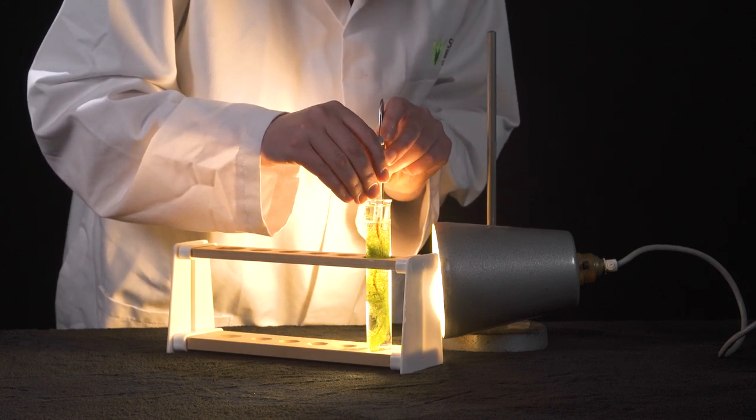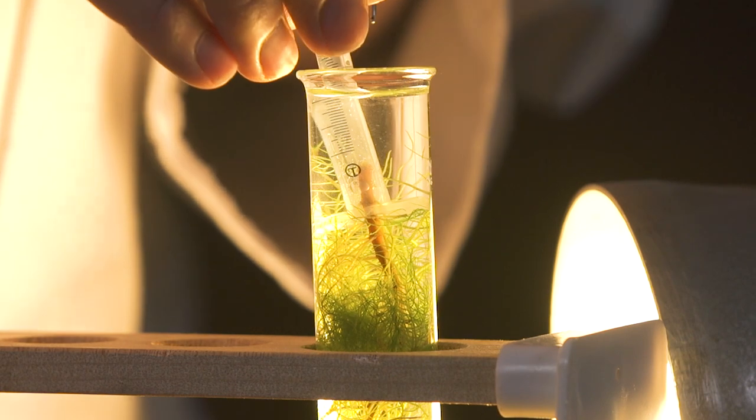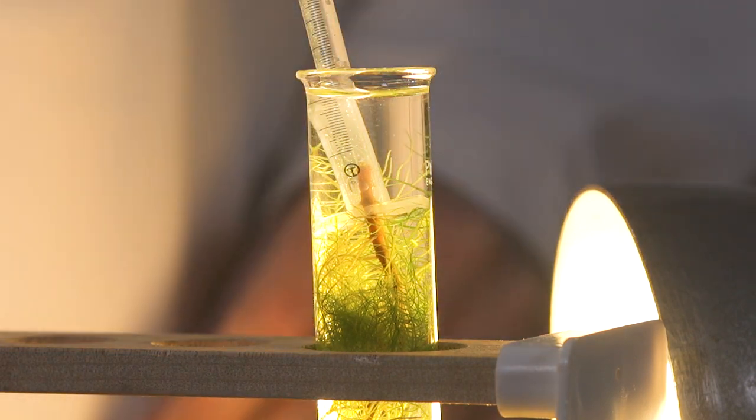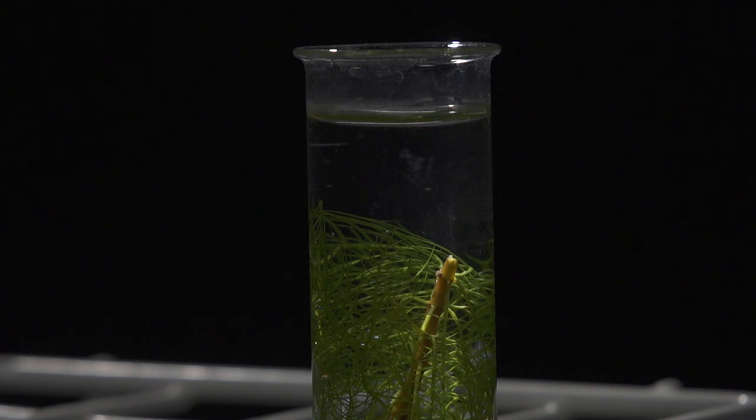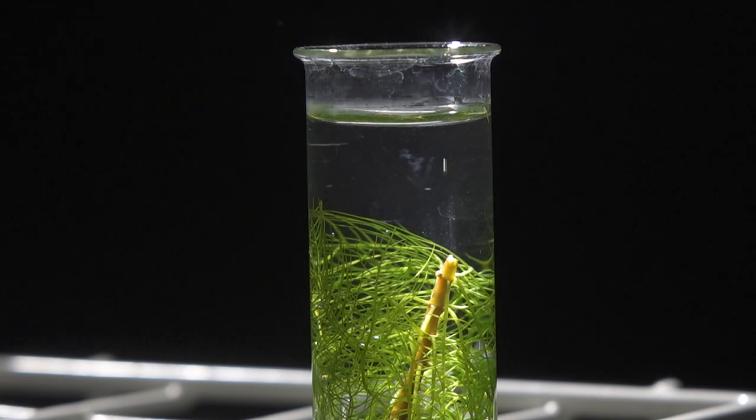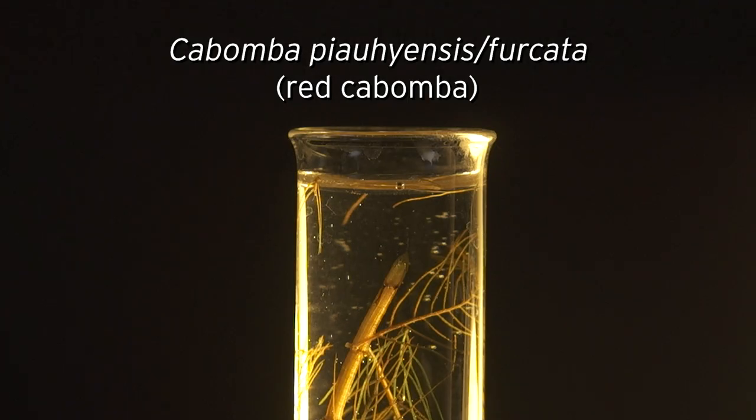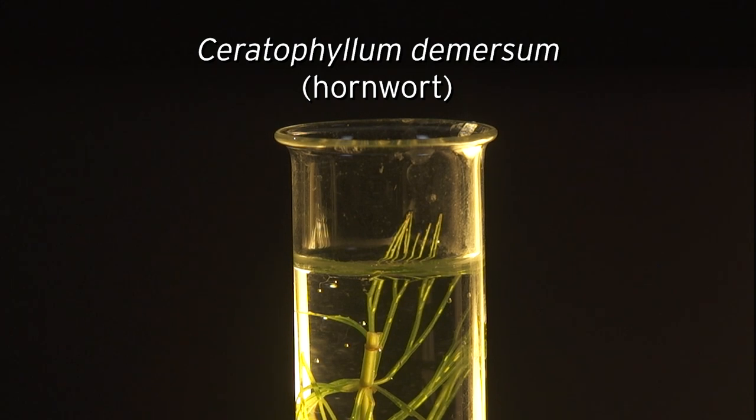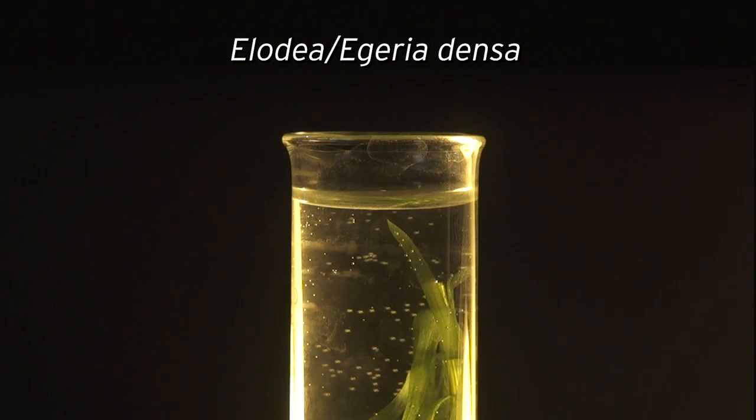I hope that we have shown you here that you can make the bubbling pondweed practical a success. All of the species we recommended produce bubbles, and the bubbling rate will respond to changes in light intensity, showing your students that light intensity affects the rate of photosynthesis. Different species produce different bubble sizes, which means that this change may be more or less obvious, but all of them can be used successfully. For up-to-date guidance on this investigation and using pondweeds, go to the SAPS website.